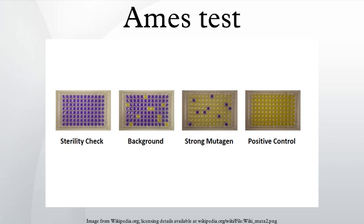The test was used to identify a number of compounds previously used in commercial products as potential carcinogens. Examples include Tris(2,3-dibromopropyl) phosphate, which was used as a flame retardant in plastics and textiles such as children's sleepwear, and furylfuramide, which was used as an antibacterial additive in food in Japan in the 1960s and 1970s. Furylfuramide had previously passed animal tests, but more rigorous tests after its identification in the Ames test showed it to be carcinogenic. These positive tests resulted in those chemicals being withdrawn from use in consumer products.